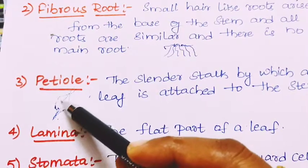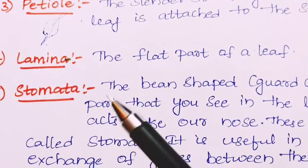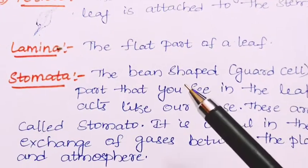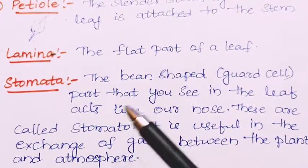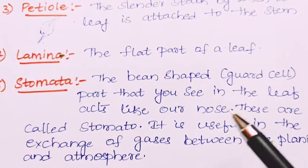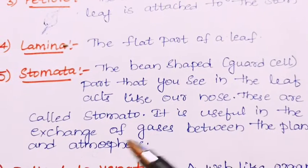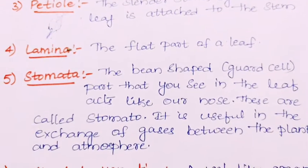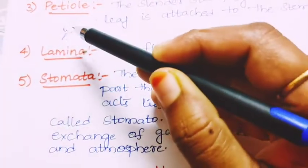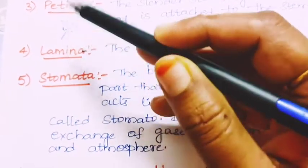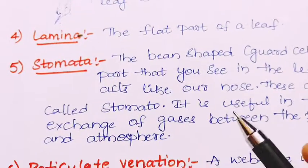Next: stomata. Stomata are bean-shaped guard cells present in the leaf that act like our nose. They are useful in the exchange of gases between the plant and the atmosphere — small pores present on the leaf through which gaseous exchange takes place.